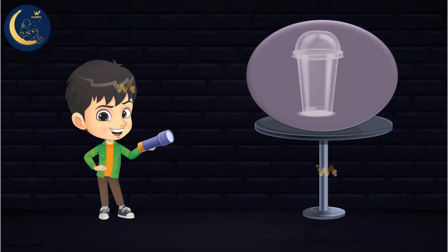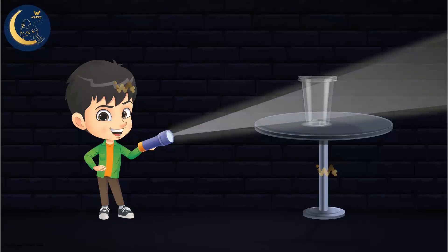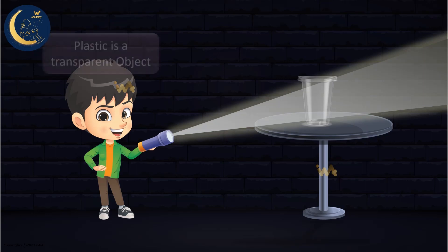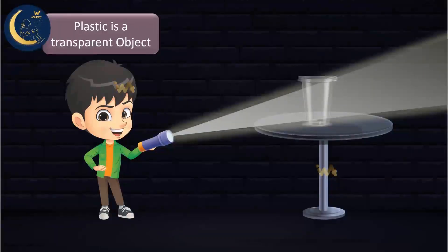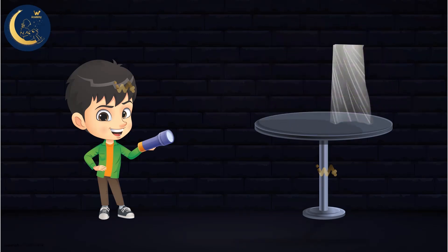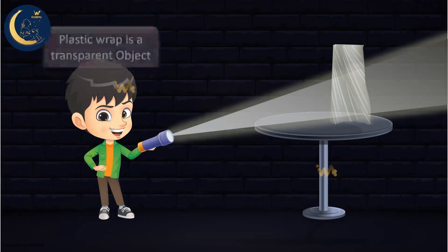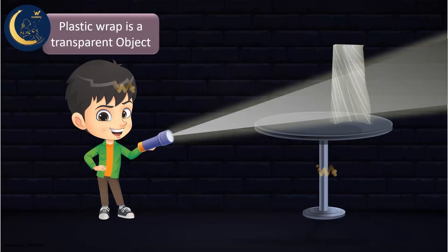But the plastic cup — if we took a piece of the same plastic that the cup was made of and shined a light through it, notice that the light easily passes through it. This proves that plastic is a transparent object. And the plastic wrap — if we took a piece of it and shined a light through it, what do you notice? Good job! Plastic wrap is a transparent object. It allows light to pass through easily.